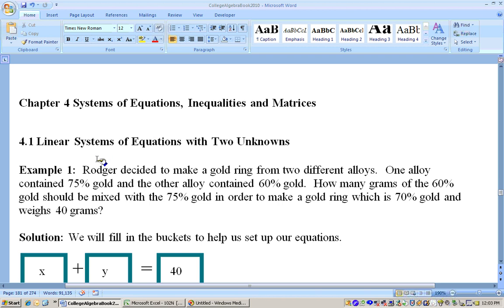Okay, this is on chapter 4 and it's on linear systems of equations with two unknowns. On this example it says Roger decided to make a gold ring from two different alloys. One alloy contains 75% gold and the other contains 60% gold. How many grams of the 60% gold should be mixed with 75% gold to make a gold ring which is 70% gold and weighs 40 grams?